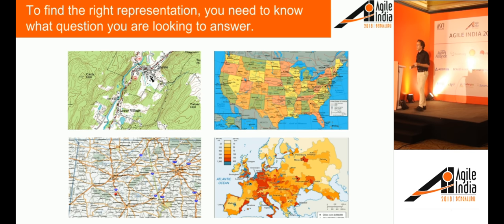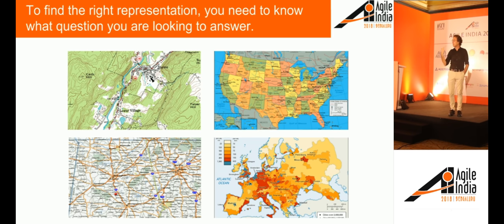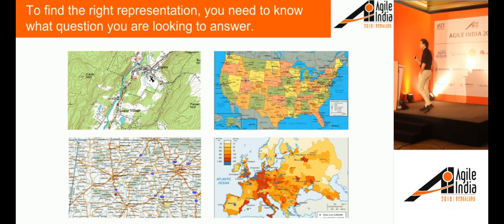To find a good model, you need to know what question you're trying to answer. Here's a classic example of four different maps — they show the same system, planet Earth, but they look very different because they answer different questions: how do I hike from A to B, or how do I drive from here to there? So if you make an architecture diagram, you first need to know what question you're answering or what decision you're trying to make. If somebody says please show me your architecture, it's valid to ask: what question would you like answered? Architecture diagrams need to be driven by a question or a decision.